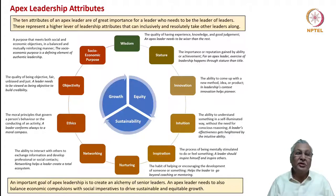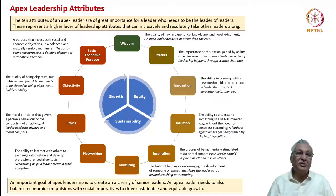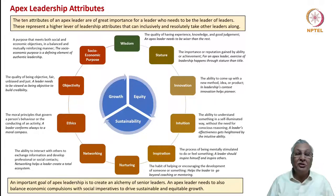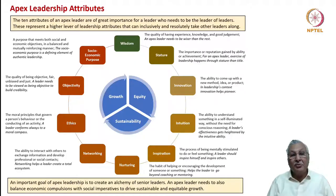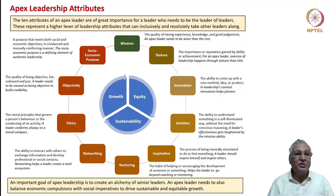Finally, socio-economic purpose: every CXO member has a functional or business agenda, but only the CEO has the responsibility, accountability, and independence to chart out a socio-economic purpose for the organization. Socio-economic purpose is one that meets both social and economic objectives in a balanced and mutually reinforcing manner. It is the defining element of authentic leadership. These are the 10 characteristics of an apex leader.